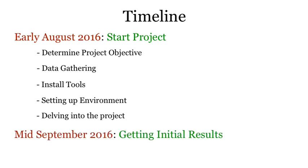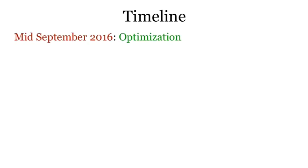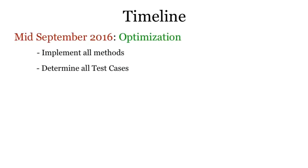By mid-September, I started getting results — just initial results that showed my implementation finally worked. I somehow barely managed to get out of the woods, but there was much that needed improvement. I then began optimizing my code with exhaustive test cases until about mid-October. A full month was required simply because the data was that big. Even verifying one result took hours at a time.